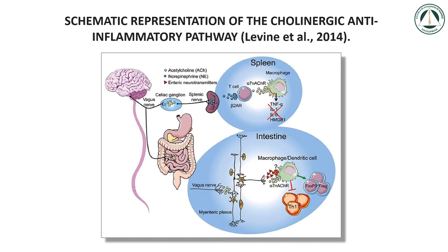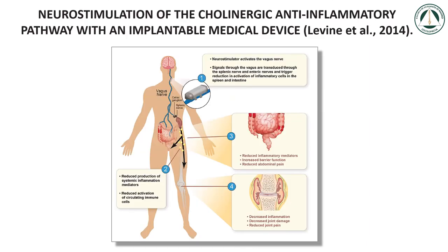In this schematic representation of the cholinergic anti-inflammatory pathway according to Levine et al. 2014, the reflex is activated in the circumventricular brain stem and vagal afferent fibers through signaling by inflammatory mediators. After integration, this sensory input triggers the efferent arm via the celiac ganglion, modulating the immune response in the spleen. Adrenergic neurons in the spleen release norepinephrine that induces acetylcholine release by a subset of splenic T-cells. Acetylcholine ligands the alpha-7 nAChR expressed on cytokine-producing macrophages, thereby reducing the release of TNF, IL-1, IL-18, HMGB1, and other cytokines.